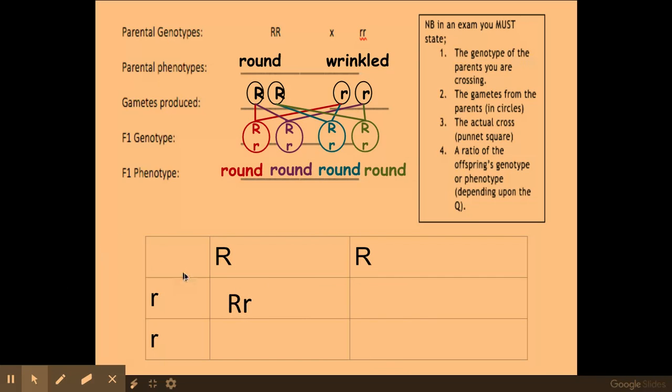If I did the cross in a Punnett square, which is what you get marks for in your exam, I'd be doing the big R and then the small r, and the same for this one big R and small r, and the same for the bottom two. As you can see here, I'm just doing this cross and I'm finding that all individuals have got a big R and a small r, so I have 100% round offspring of my F1 generation.